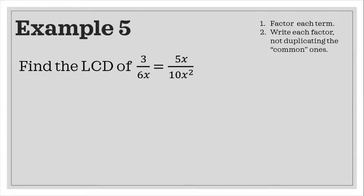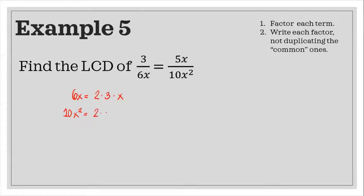Example number five. Find the LCD of 3 over 6x is equal to 5x over 10x squared. We need to factor each term in the denominator. So 6x equals 2 times 3 times x. We use factors 2 and 3 because these are prime numbers — this process is also known as prime factorization. For 10x squared, we have 2 times 5 times x times x, where 2 and 5 are also prime numbers.